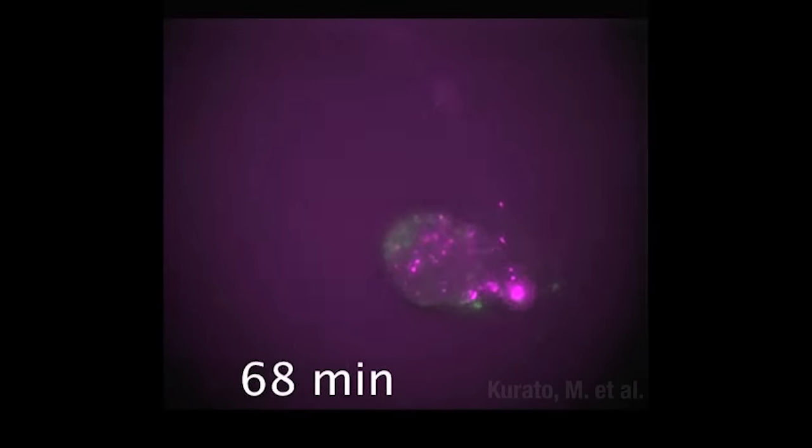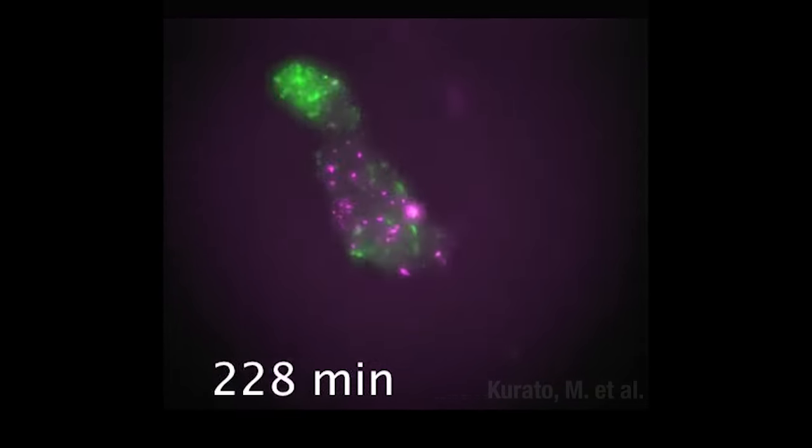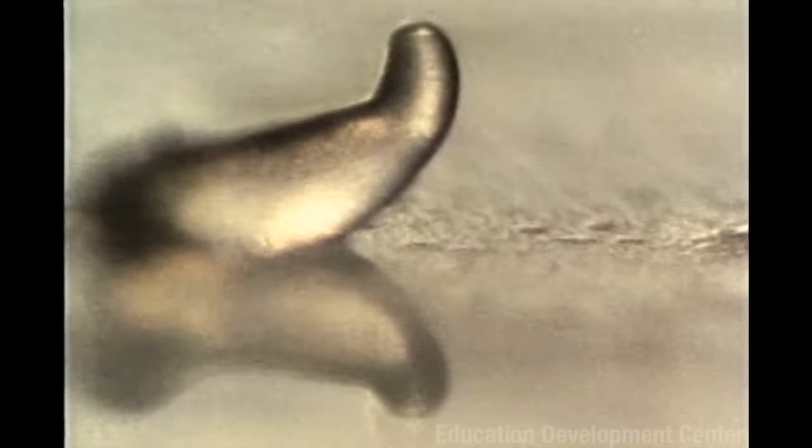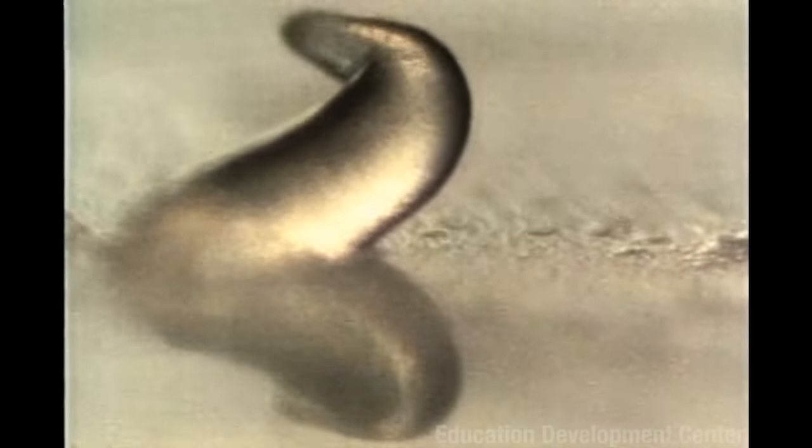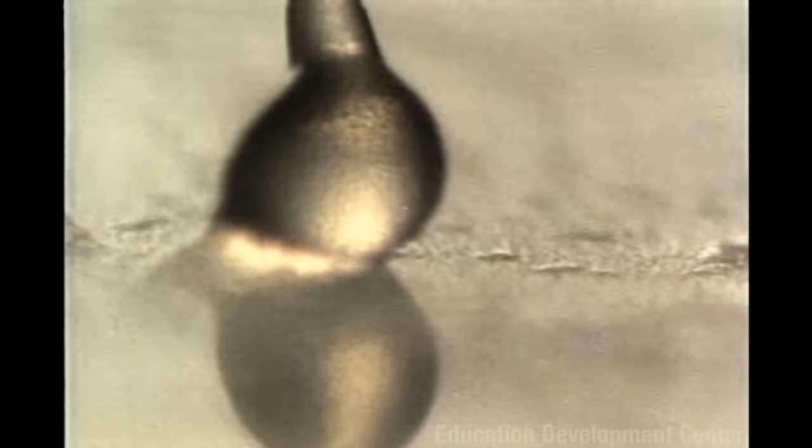This 1 to 4 ratio of cells in the front to cells in the back is very important. If things get wonky, cells will change from one type to the other to maintain the balance. For example, this slug here just had its front part amputated. And you can watch as cells from the back switch types to create a new front. When this little slug, made up of around 100,000 individual amoeba, finds just the right spot, it stops and forms a little mound of death. You'll see.